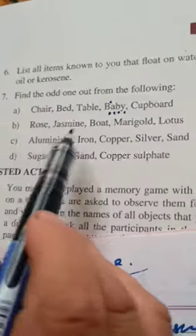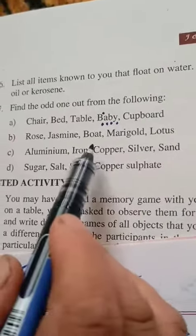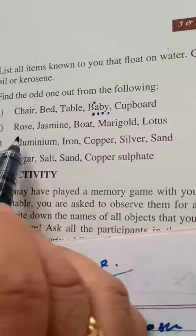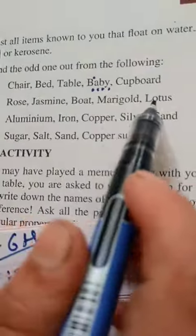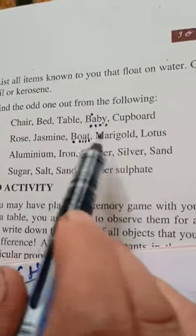The rose, jasmine, boat, marigold, lotus. They are all the same. The rose, jasmine, boat, marigold, lotus. This is not the same. It is not the same. In this case, you find the odd one out.